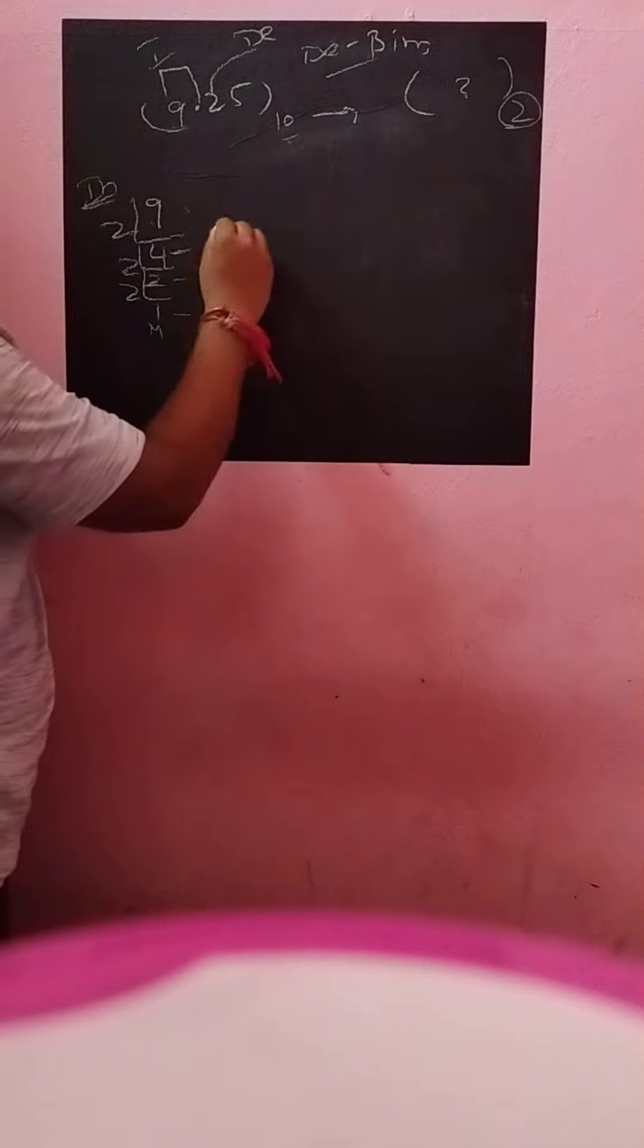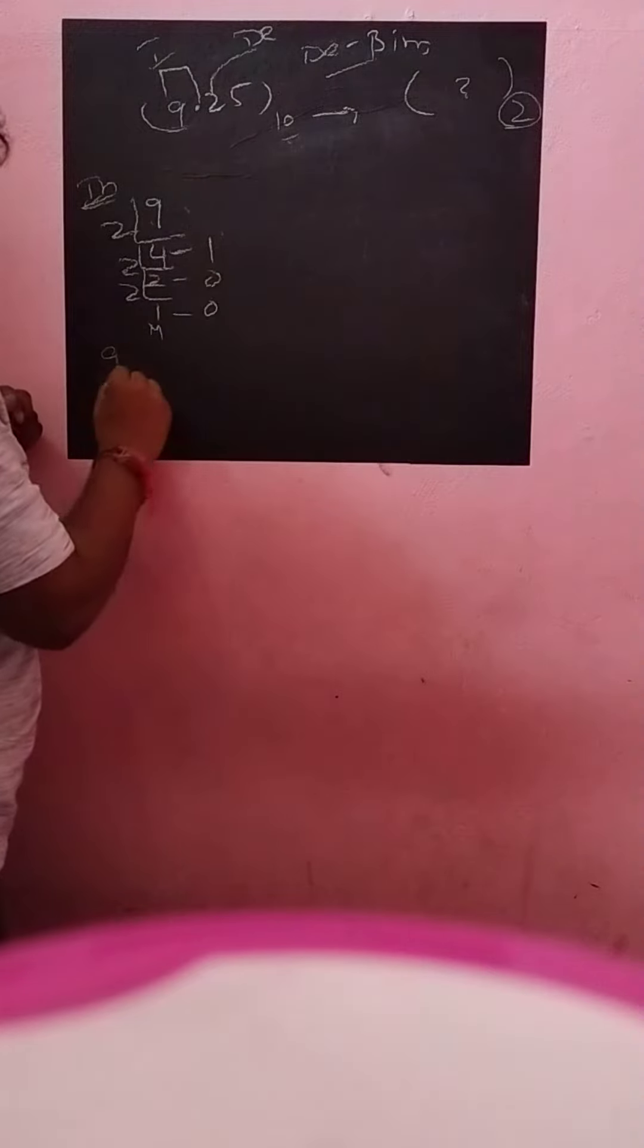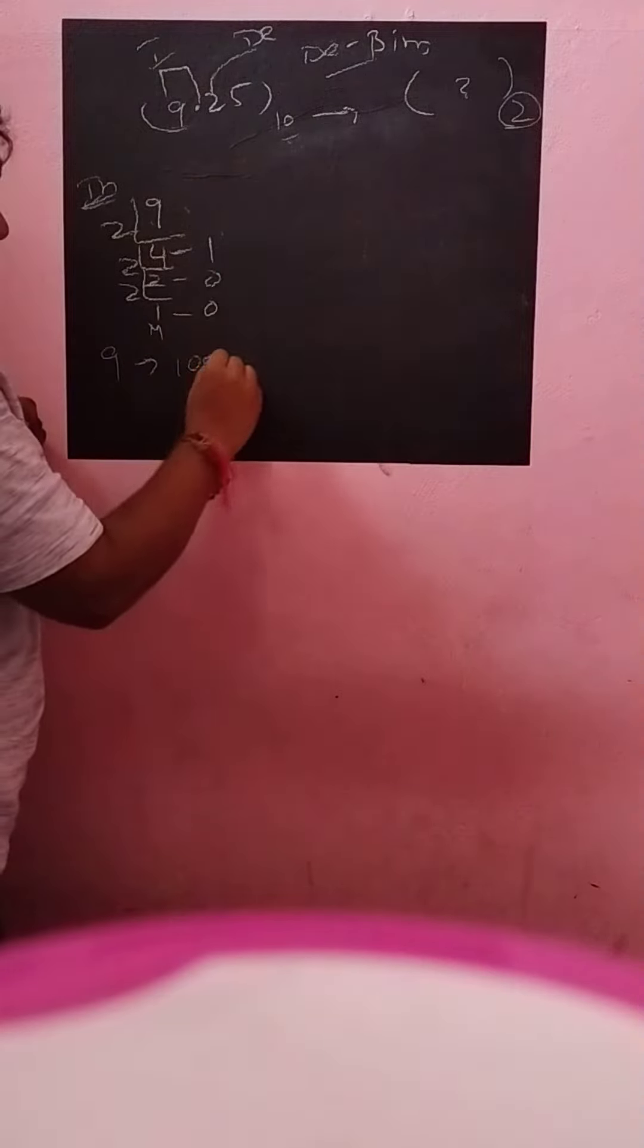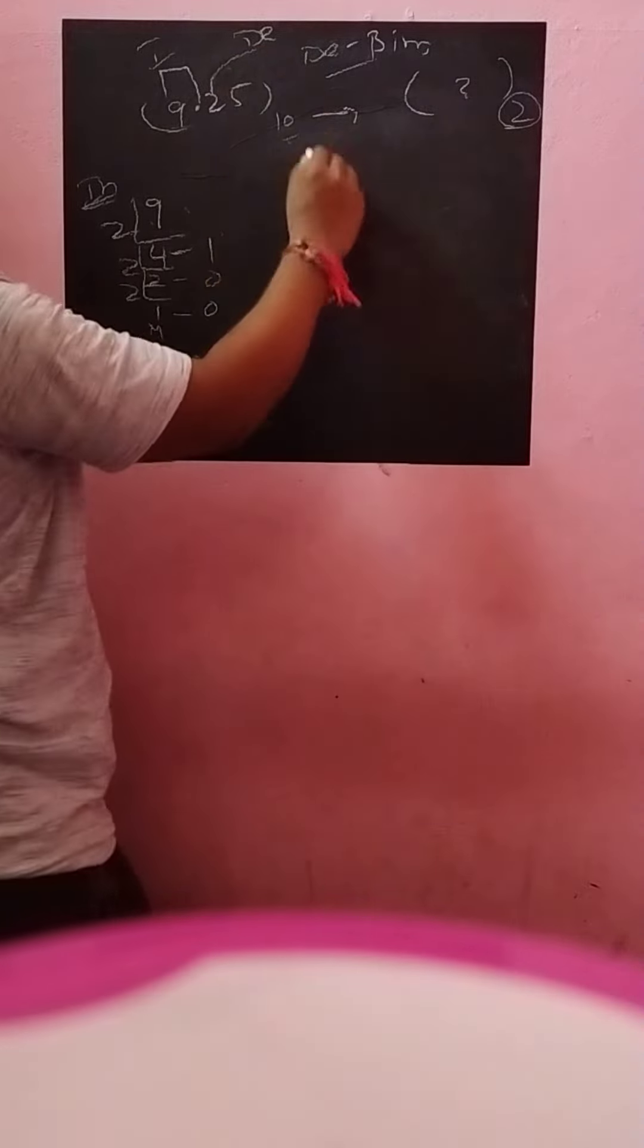This is MSB, this is LSB. So for 9, the binary is 1001. What about the decimal part?